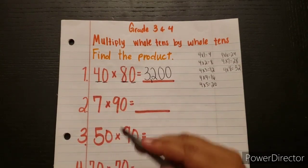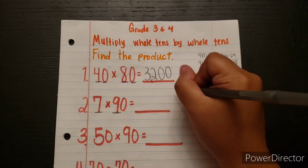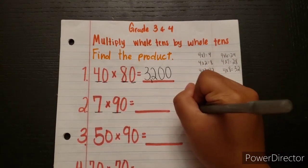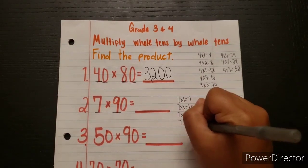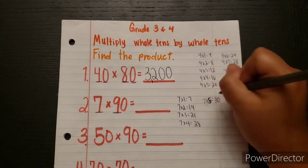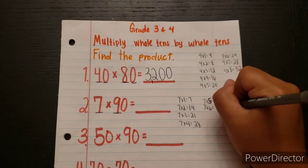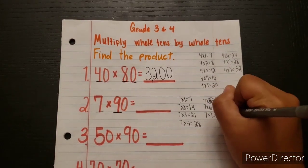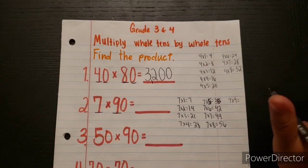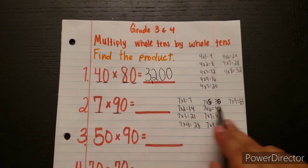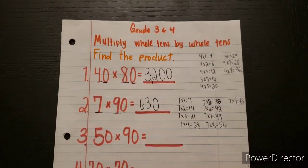We have 7 times 90. So all we need to do is multiply 7 times 9. Let's go ahead and write the multiples of 7 right here. We have 7×1=7, 7×2=14, 7×3=21, 7×4=28, 7×5=35, 7×6=42, 7×7=49, 7×8=56, and 7×9=63. So we're going to go ahead and write 63 right here. Then we just add 1 zero at the very end. So 7 times 90 equals 630.